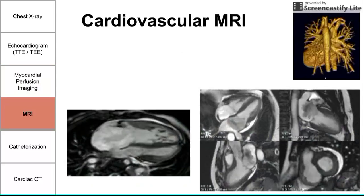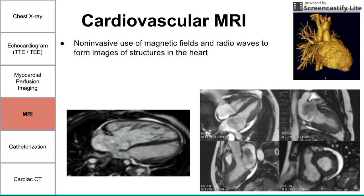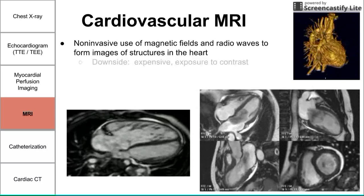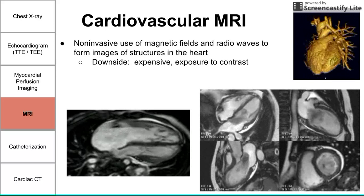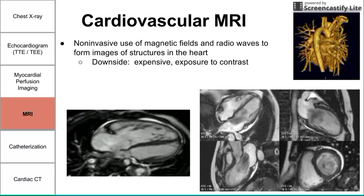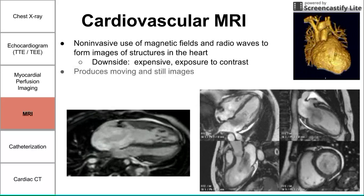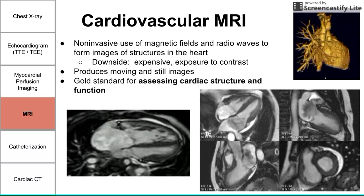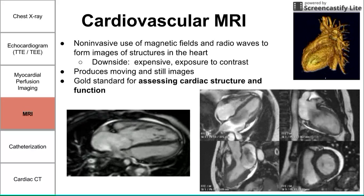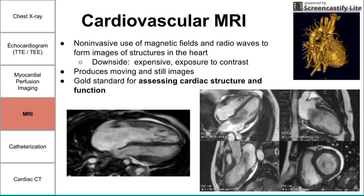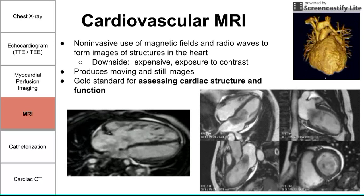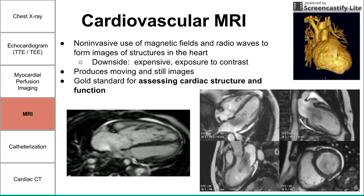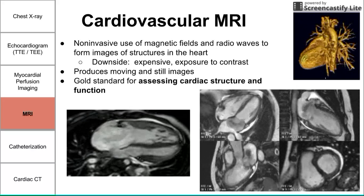We also have cardiovascular MRI, which applies the same principles of magnetic fields and radio waves to form images of the body. It can produce both moving and still images. The best use of cardiovascular MRI is assessing cardiac structure and function — we can see good images of the heart beating. There is clear contrast between tissues, which you don't get with CT or x-rays, and that's one of the major benefits of MRI. The downside is that it's pretty expensive.